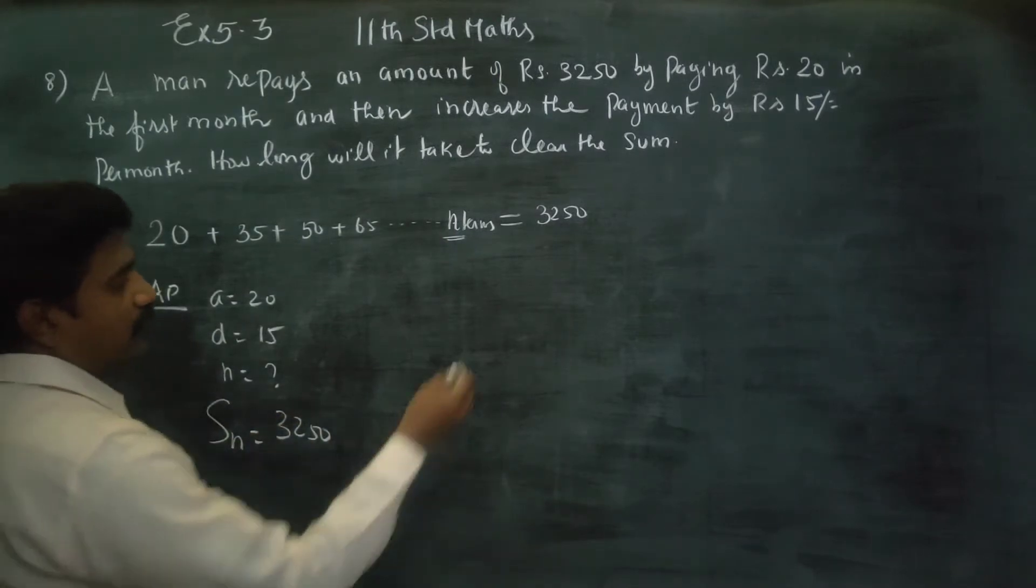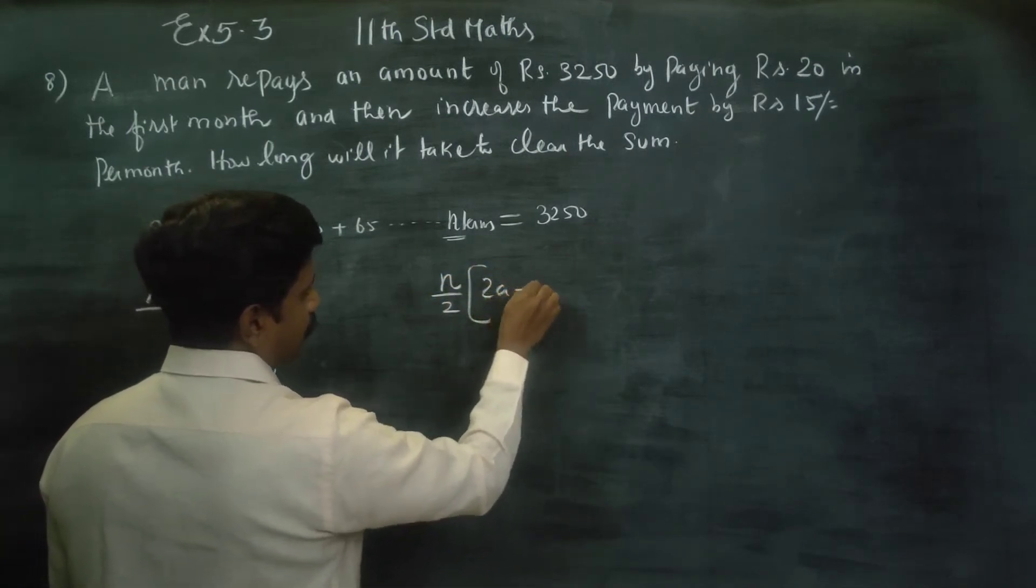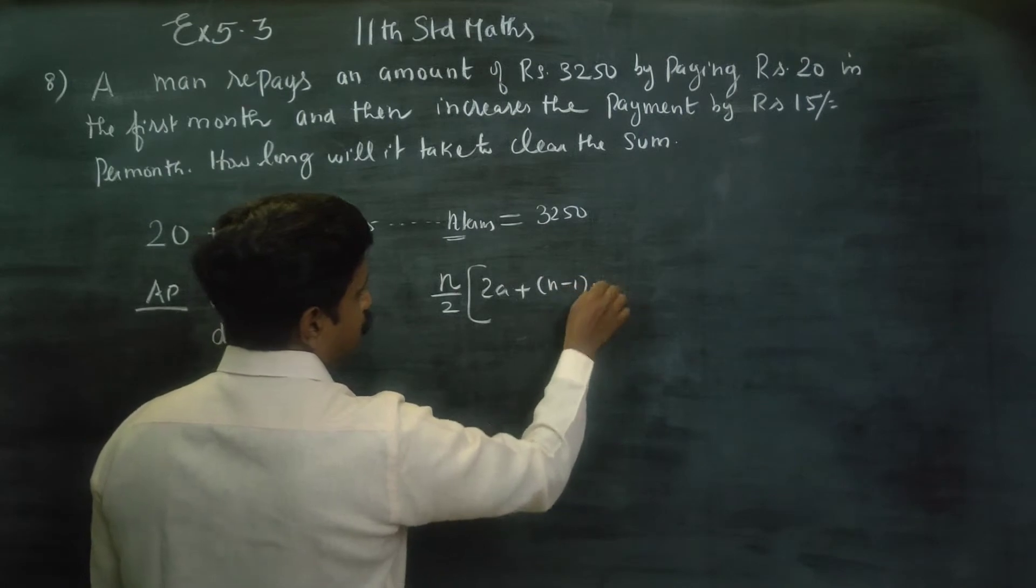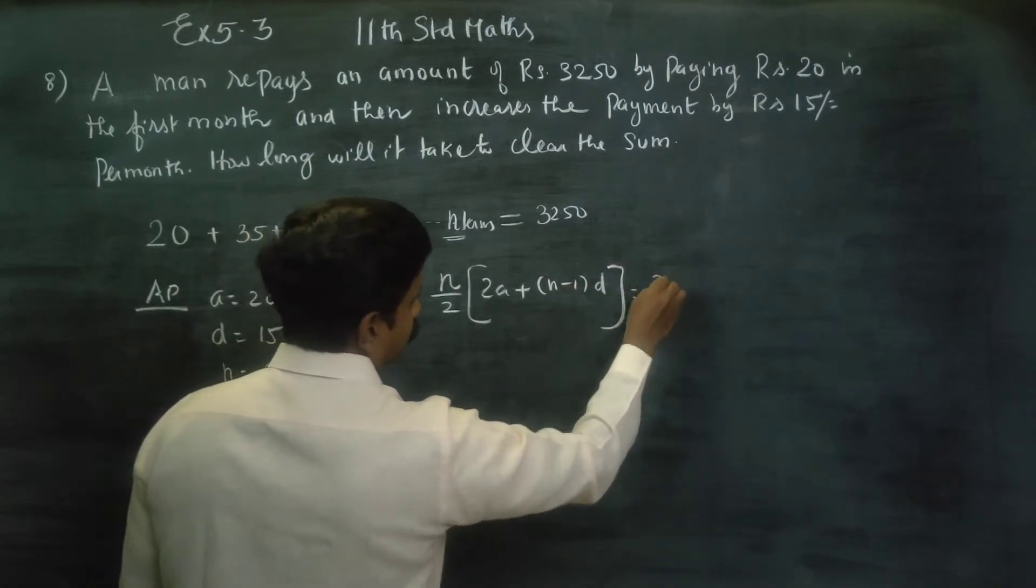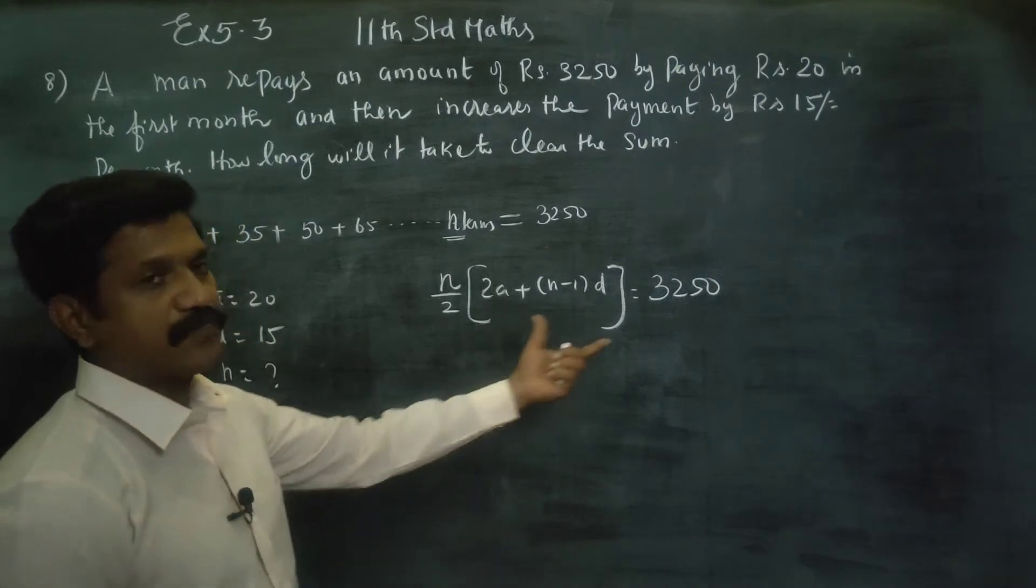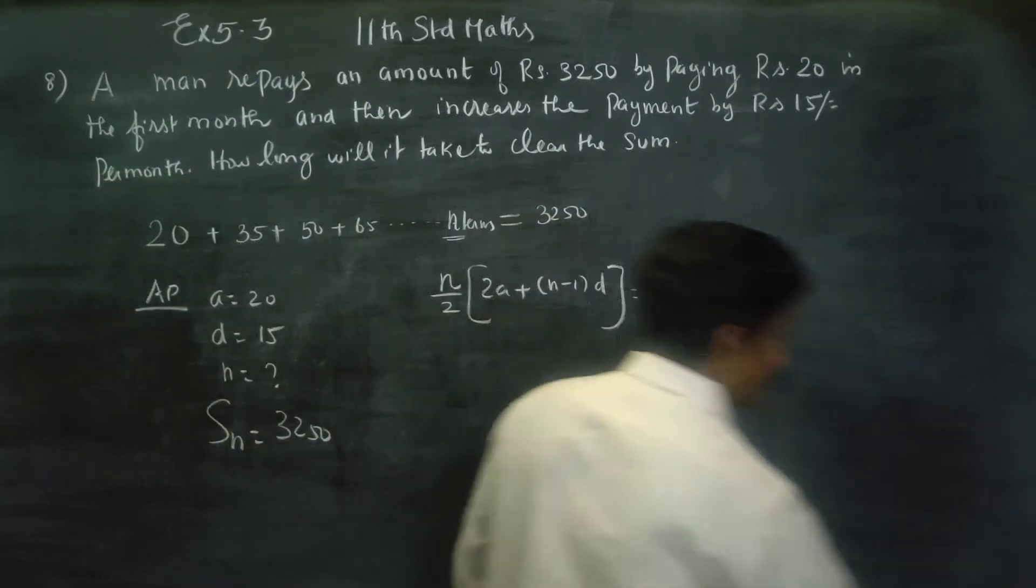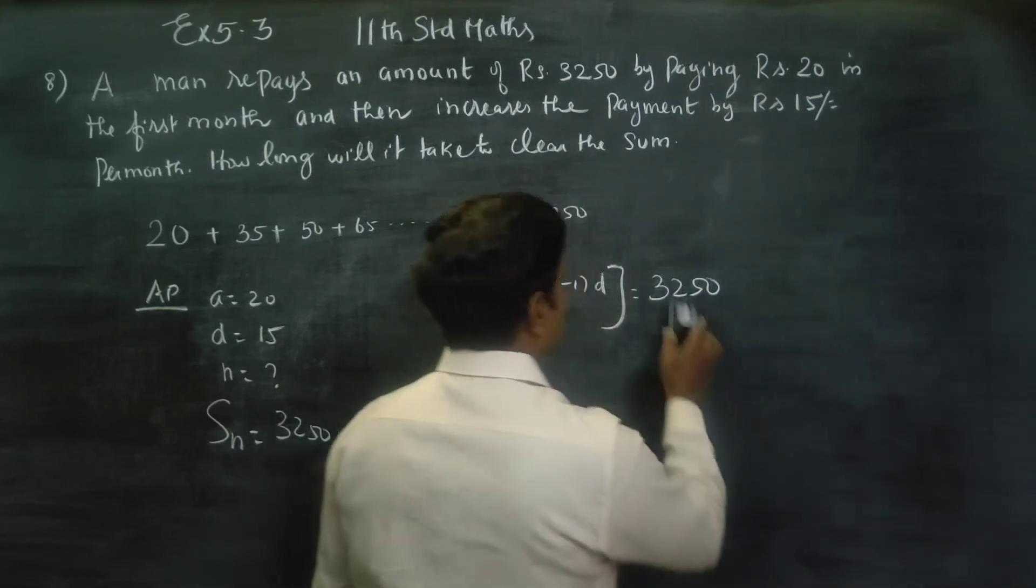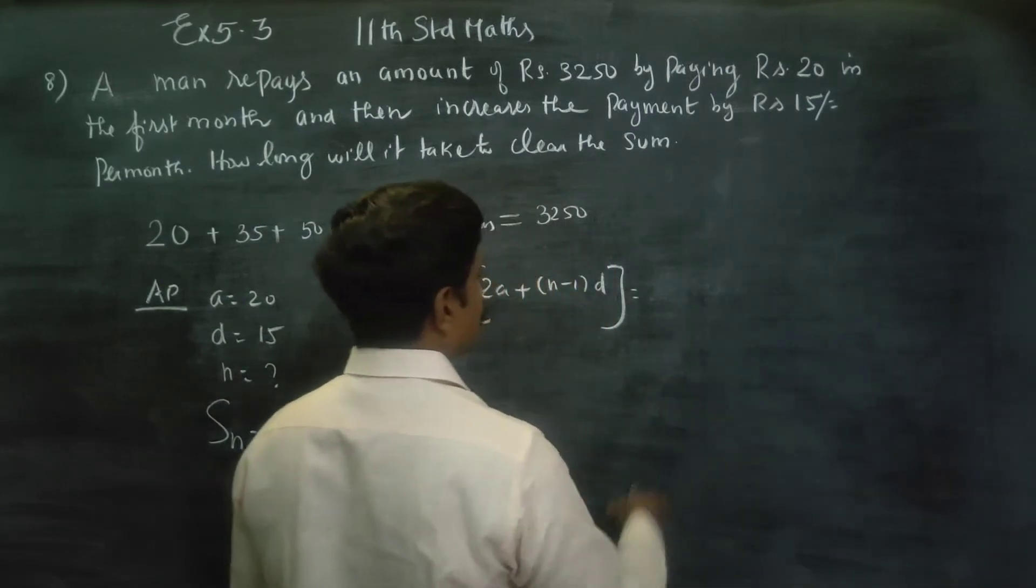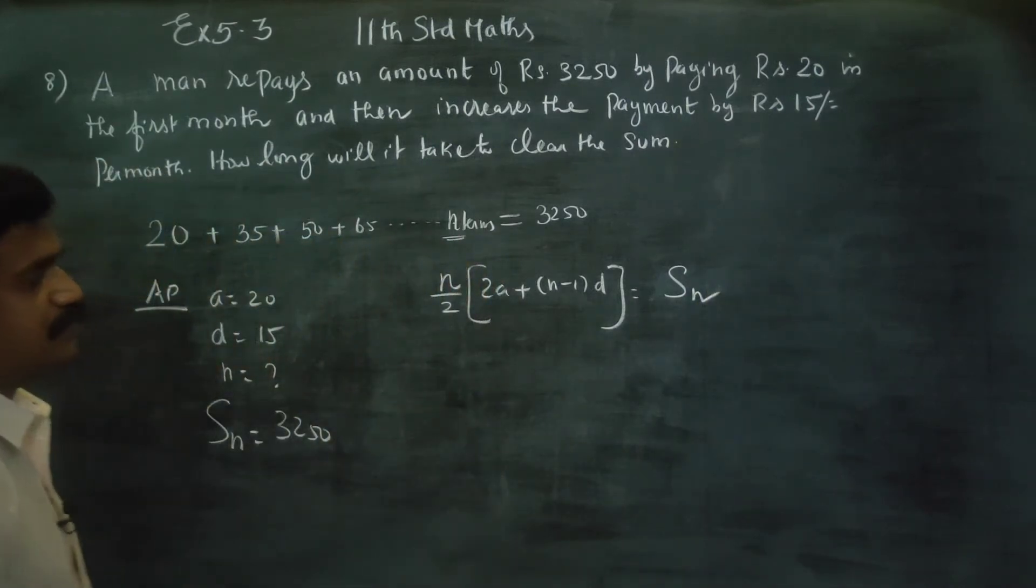I will start. The formula is n by 2, times 2a plus n minus 1 into d equals 3250. This is our formula: Sn equals n by 2, times 2a plus n minus 1 into d.